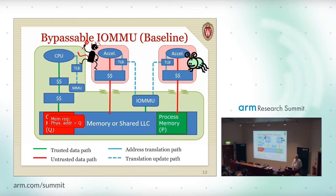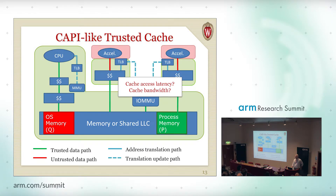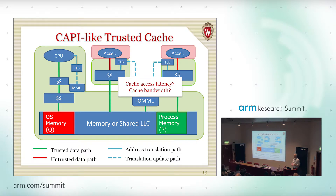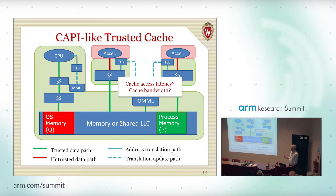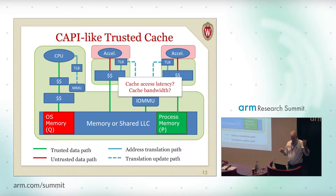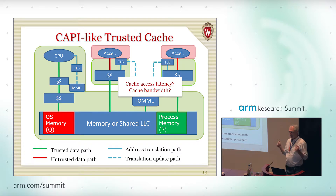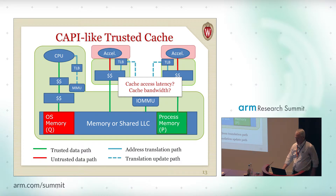IBM has proposed the CAPI and OpenCAPI-like system, which basically says: we'll design the cache for you. The accelerator accesses the cache designed by IBM or whoever. This works great, except what's the latency of that cache? What's the bandwidth of that cache? Does my crypto accelerator need the same cache that a GPU needs? It's a one-size-fits-all problem. And one-size-fits-nobody particularly well. So it's safe, but it's not a good high-performance solution.